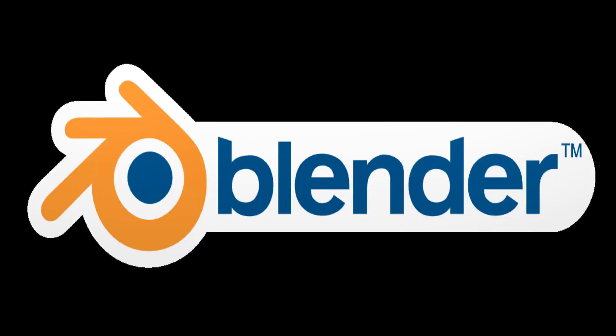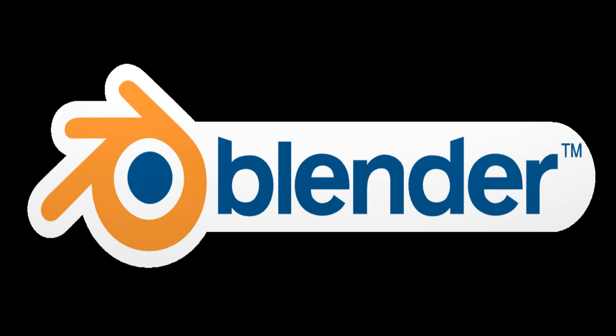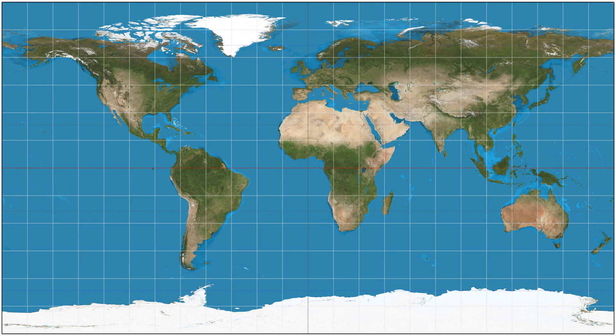For the ray tracing process, I use a 3D modeling software called Blender that has a built-in ray trace renderer. The rendered image is in the form of an equirectangular projection. This form of projection is also the most common form of world map projection that we are familiar with. The X coordinate represents the longitude of the projection, and the Y coordinate represents the latitude.